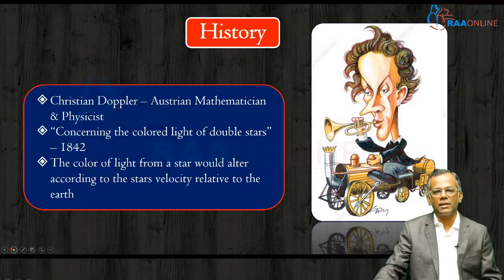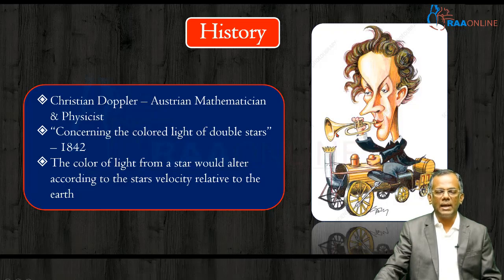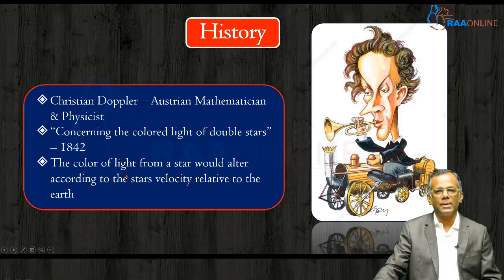Coming to the history of Doppler, it was first described by the great Christian Doppler, who was an Austrian mathematician and physicist. He described this in his paper concerning the colored lights of double stars as early as 1842, in which he said the color of light from a star would alter according to the star's velocity relative to the earth.